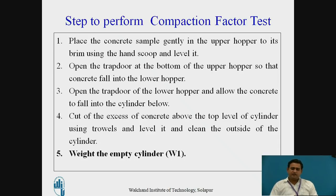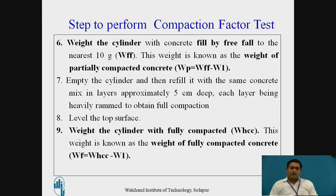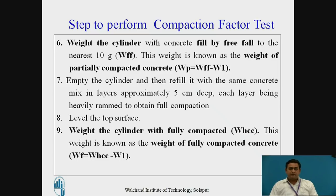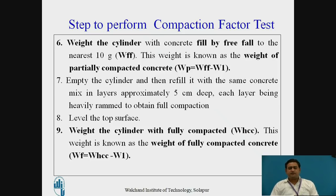After that, weigh the empty cylinder — let's call it W1. Now weigh the cylinder with the concrete filled by the free fall, that is the gravitational fall, to the nearest 100 grams — in short we define it WFF, that is weight for free flow. This weight is known as the weight of the partially compacted concrete, that is WP = WFF minus W1. Now empty the cylinder and refill the concrete in layers of approximately 5 cm depth, compacting each layer by the compacting rod.